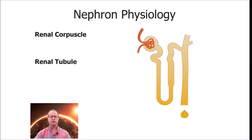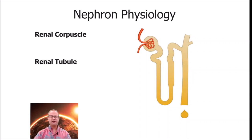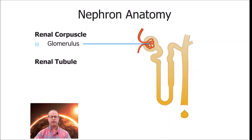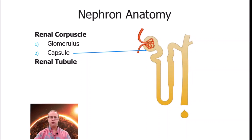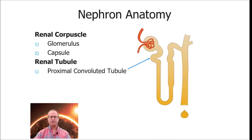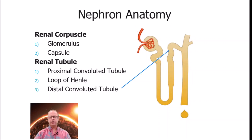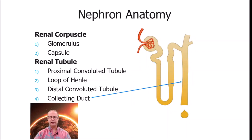To cap off this module on the urinary system, let's briefly explain the functionality of the nephrons. The nephron is the smallest functional unit of the kidney, divided into two main parts: the renal corpuscle and the renal tubule. The renal corpuscle consists of a glomerulus and a Bowman's capsule. The glomerulus is a very leaky capillary bed — stuff leaks out of the glomerulus and enters the Bowman's capsule, and this is called filtrate. This process is called filtration. After leaving the Bowman's capsule, filtrate enters the renal tubule: the proximal convoluted tubule, the loop of Henle, the distal convoluted tubule, and the collecting duct. Anything that stays in the collecting duct will end up in the urine.